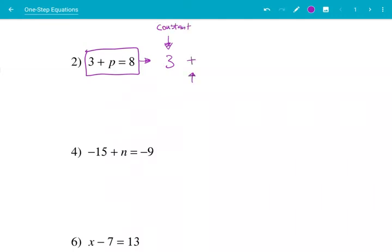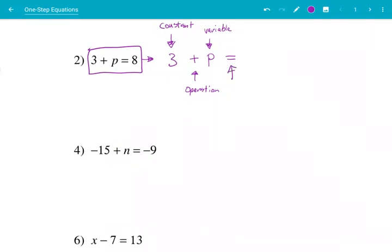And that right there, that's the operation. So what's being done to this, which is the variable. Remember this. That's the equal sign. And then eight is another constant. Those are the pieces right there.